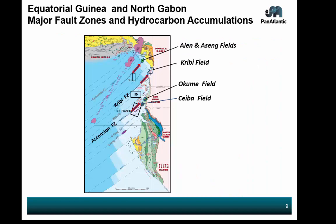Now we're moving up to the Rio Muni Basin area — this is really interesting. Starting at the south, the Ascension Fault Zone going through our Block K aligns directly with the Seda Field and the Kumey Field. We have the Karibbe Fault Zone, which aligns with the Karibbe Field. And we have a fault zone to the north which aligns with the Allen and the Seng Fields up north. So we're getting the same message from all three areas.